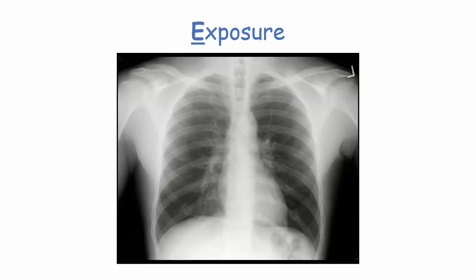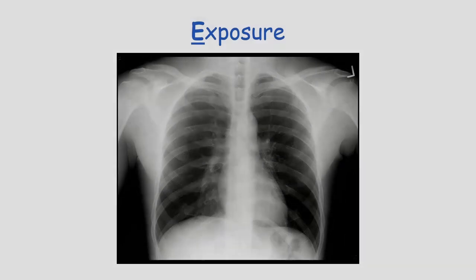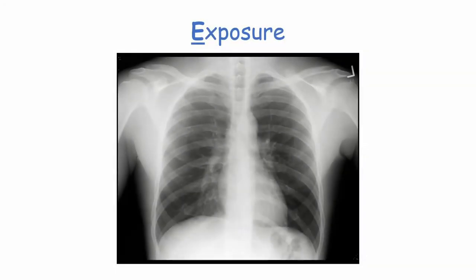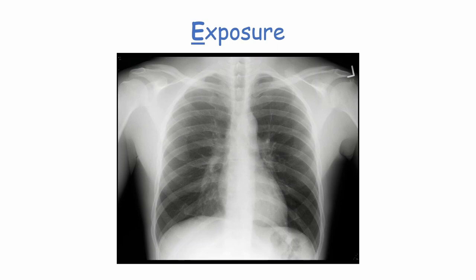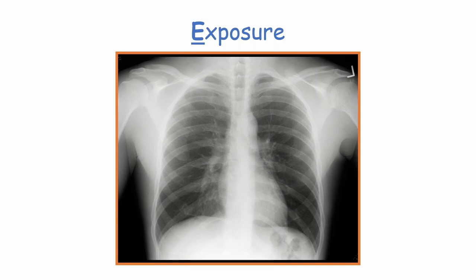Exposure refers to how much X-ray has been allowed to pass through the chest, similar to exposure in a camera. Too much exposure will create an image that's too dark, whilst an underexposed image will be too light. An adequately exposed chest X-ray will have visible vertebrae behind the heart and also a left hemidiaphragm visible up to the edge of the spine. It's also a good idea to check that the whole chest has been exposed — can you see the whole chest from top to bottom, left to right?